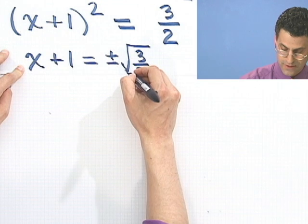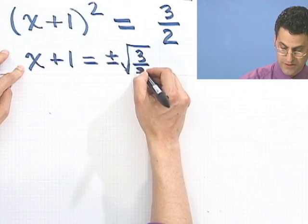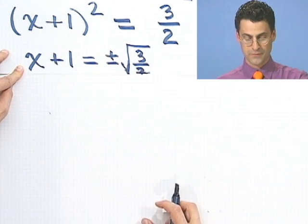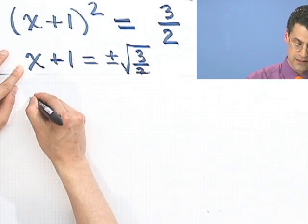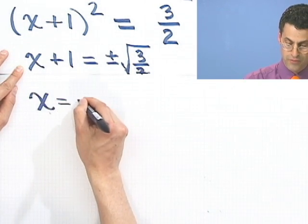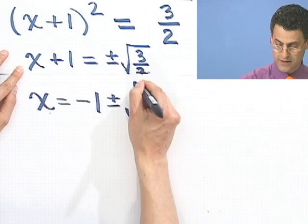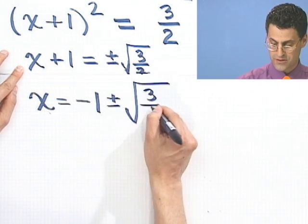Now that square root is on everything, including that little 2 which is pathetically drawn on the bottom there. Now I want to bring the 1 over, so I subtract the 1. And so what I see is x equals minus 1 plus or minus the square root of 3 over 2.